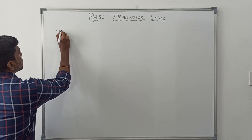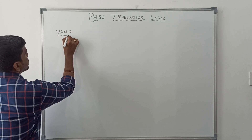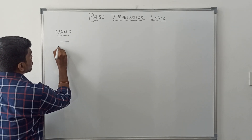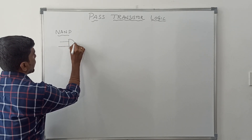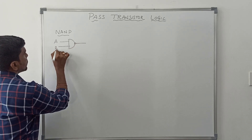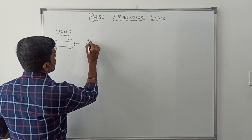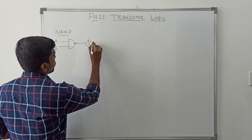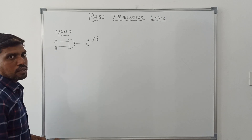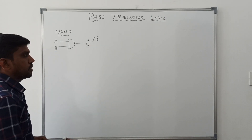In this video, first I will design a NAND gate using PMOS transistor. First I draw the symbol of NAND gate. It's a symbol with input variables A and B, and output is Y. The Boolean expression is Y equal to A dot B, bar — the whole complement. That's the Boolean expression for NAND gate.